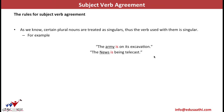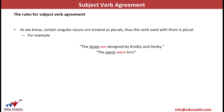Rule 5: certain plural-looking nouns are treated as singulars, so the verb is also singular. Examples include team, group, news, army, school, and college. For instance, 'The army is on its excavation' and 'The news is being telecast.' These are treated as single entities, so they take a singular verb.